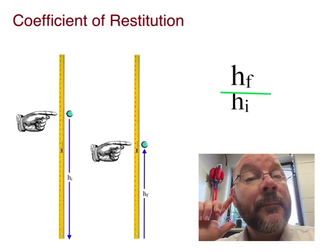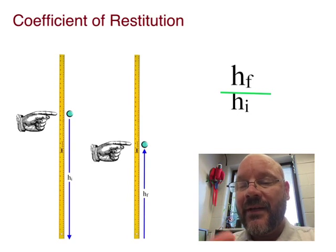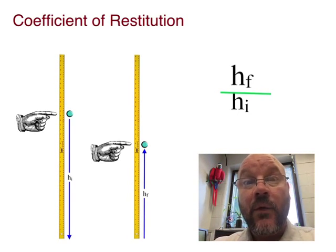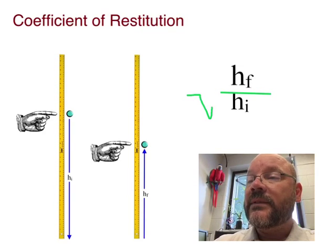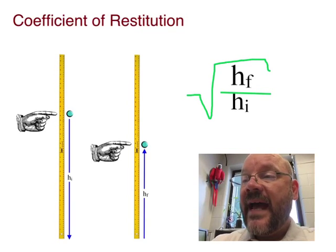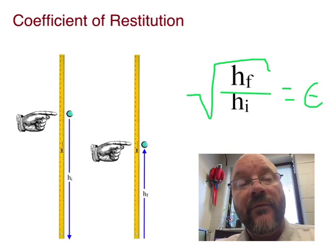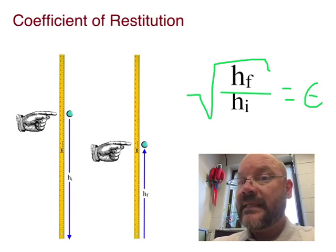Less than 1. That's right. Okay, so what we will do, we're going to take this ratio, and we'll take the square root of it, and that is equal to the coefficient of restitution. Simple as that.